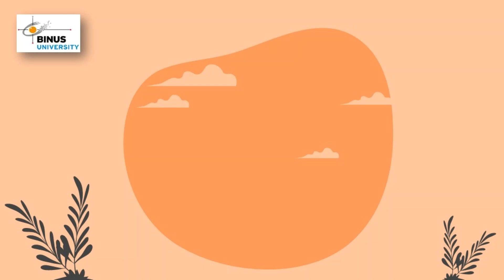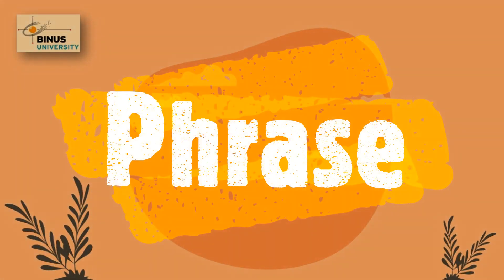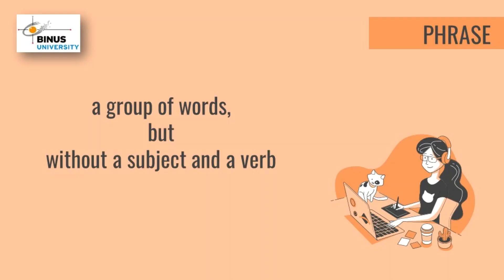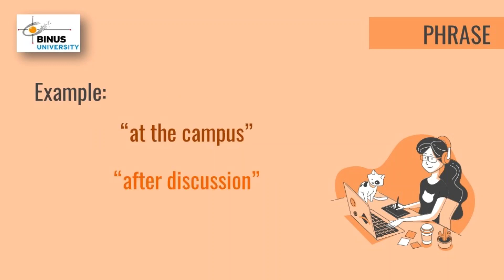A sentence in English can be divided into various parts. Let's start with the smallest part, the phrase. A phrase contains a group of words but without a subject and a verb. For example, at the campus or after discussion. These examples meet the characteristics of a phrase — it is a group of words because it contains more than one word and it doesn't have a subject and a verb.